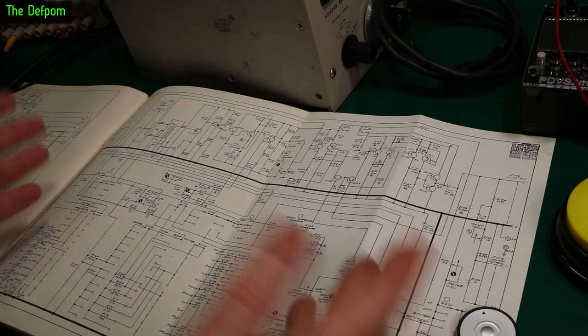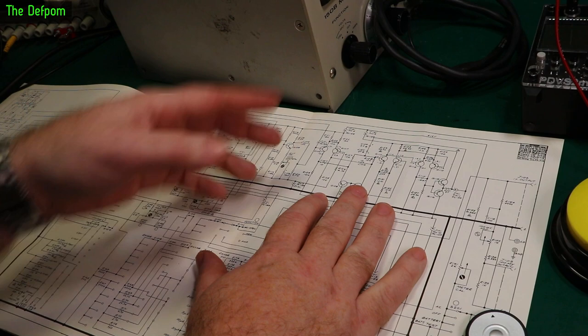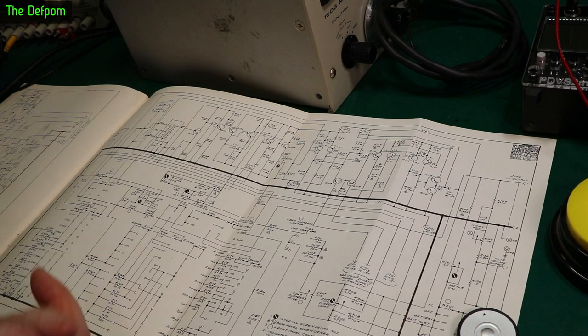Continuing on with this repair of the Keithley 150B. In the last section, I was trying to figure out if it even worked and it didn't. We've put an input voltage in, nothing showing up on the meter. It did seem to have power, the power supply rails look fine. The rails look okay, voltage looked okay.